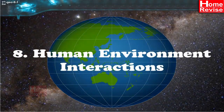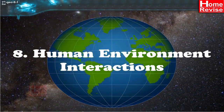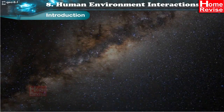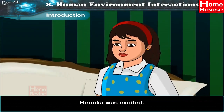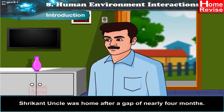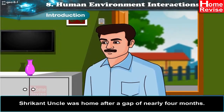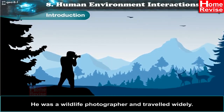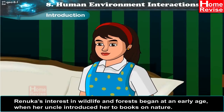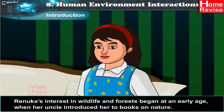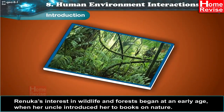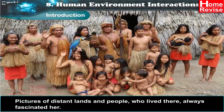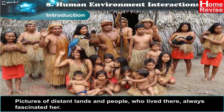Chapter 8: Human Environment Interactions. Introduction — Renuka was excited. Shrikant uncle was home after a gap of nearly four months. He was a wildlife photographer and travelled widely. Renuka's interest in wildlife and forests began at an early age when her uncle introduced her to books on nature. Pictures of distant lands and people who lived there always fascinated her.